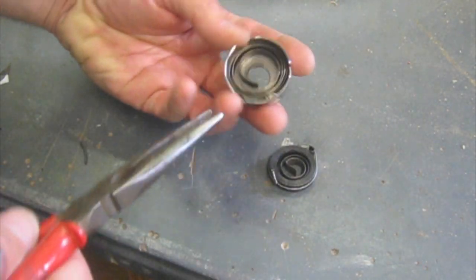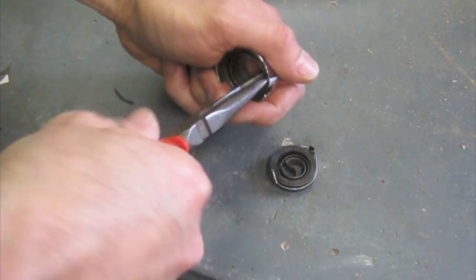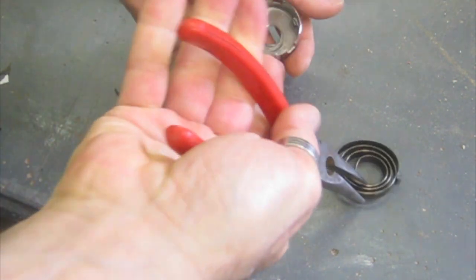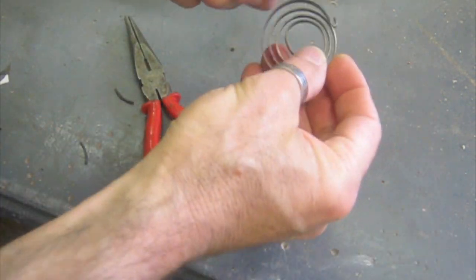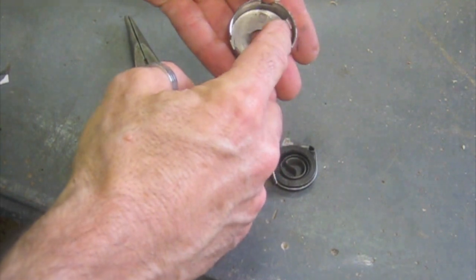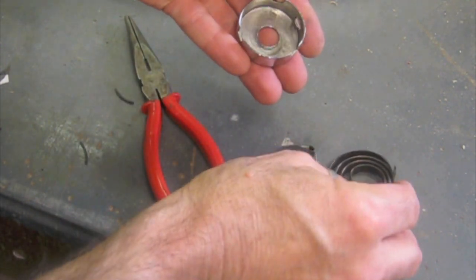I'll just pull the old one out. Should just pull straight out. That's it. That little return there on the spring just locks into that little locator there on the cover.